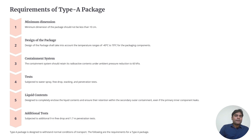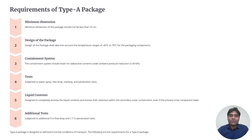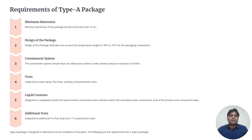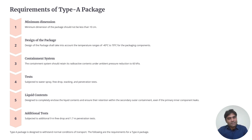The requirements of Type A packages include a minimum dimension of not less than 10 centimeters. The package design shall account for a temperature range of minus 40 degrees centigrade to 70 degrees centigrade. The containment system should retain its radioactive contents under ambient pressure reduction to 60 kilopascals. The tests they are subjected to include the water spray test, free drop test, stacking test, and penetration test, which will be covered in forthcoming slides.